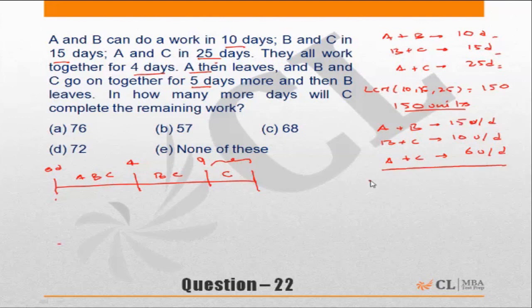So if I add all three of them, I will get 2(A+B+C), and the amount of work would be 15 plus 10 is 25, plus 6 is 31 units. So I can say that A+B+C in two days will be able to do 31 units of work, or A+B+C will do 15.5 units of work per day.